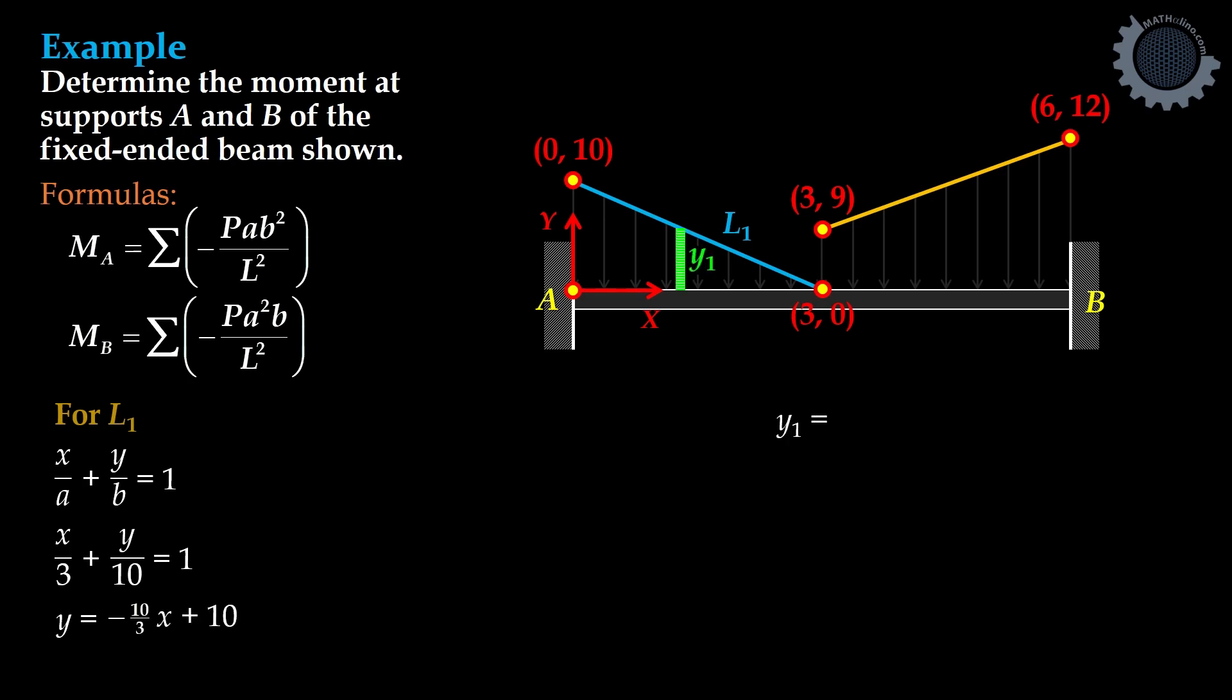Therefore, Y1 is equal to 10 minus 10 over 3 of X1. Our P1 is equal to Y1 times 10 minus 10 over 3 of X DX.